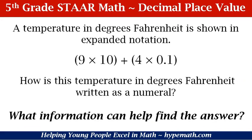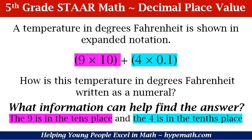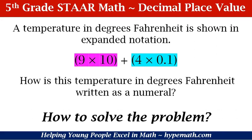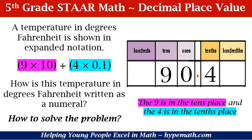The next question we should ask ourselves is: what information can help me find the answer? Now that I know what I'm looking for, I need to look for clues or information that will help me find the answer. In this problem, I know that the nine is in the tens place because we have nine times ten, and that four is in the tenths place. We have an example here of a place value chart, with the nine in the tens place and the four in the tenths place.